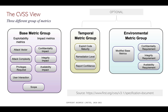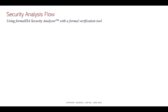The CVSS view: there are three different groups of metrics. They provide a way to quantify risk assessment — base metric group, temporal metric group, and environmental metric group. For now, we've only looked at the base metric group. It specifies which attack vectors would be used, what the complexity of the attacks would be, what privileges would be required, what user interaction would be needed, whether it would impact confidentiality, integrity, or availability, and whether the scope would be changed. For more details on these definitions, you're welcome to visit first.org.